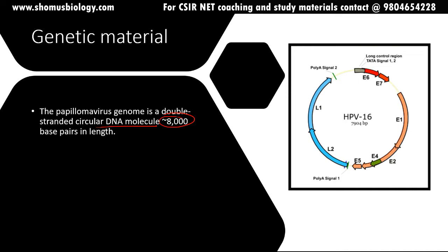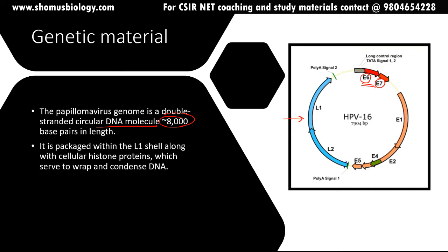It's a circular DNA, as you can clearly see in the right-hand side picture. It contains two very important genes — E6 and E7 — that actually cause the transformation of a normal cell into a malignant cell. This DNA is packaged within the L1 shell along with cellular histone proteins, which serve to wrap and condense the DNA. 8,000 bases is quite large relative to the virus size of 50 to 55 nanometers in diameter.